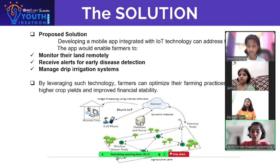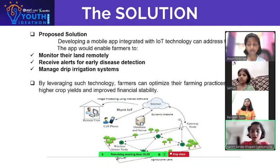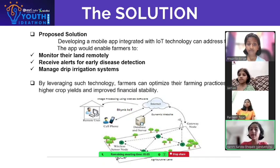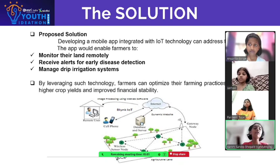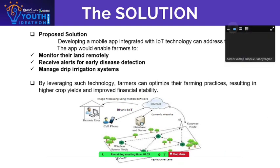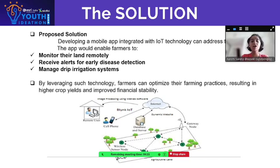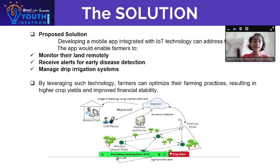The solution. Developing a mobile app integrated with IoT technology can address these issues. The app would enable farmers to monitor their land remotely, receive alerts for early disease detection, and manage drip irrigation systems. By leveraging such technology, farmers can optimize their farming practices, resulting in higher crop yields and improved financial stability.